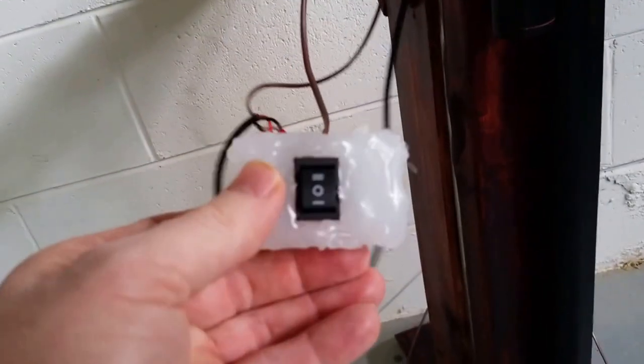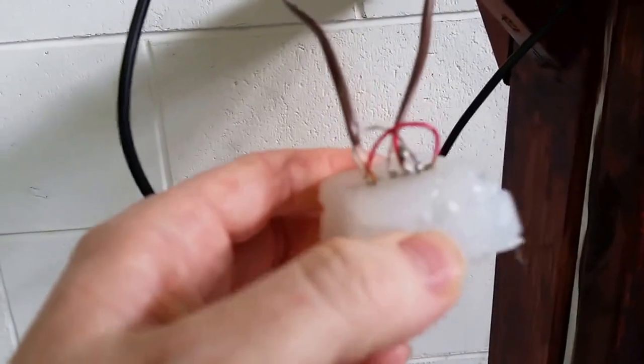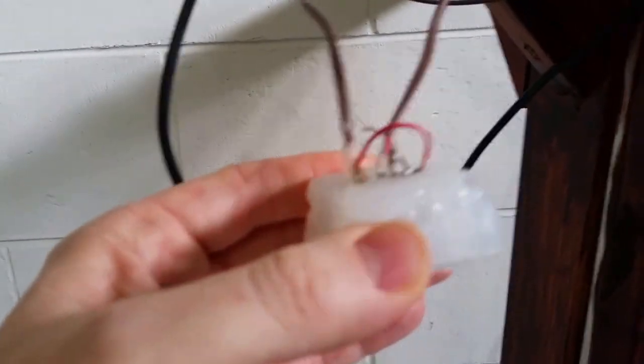So I kind of had to makeshift the case that my switch goes into. This is actually pretty interesting. I used a hot glue gun and basically I had a little plastic case that a bunch of screws came in. All the screws are gone so I put the switch down inside that case right in the middle.